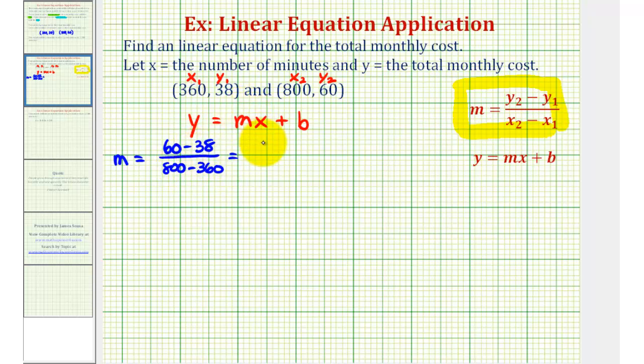Well, 60 minus 38 is equal to 22. 800 minus 360 is equal to 440. These two have a common factor of 22. So this simplifies nicely to 1/20, but because this represents the fee per minute, let's go ahead and convert this to a decimal. This would be 0.05, which represents the cost per minute.